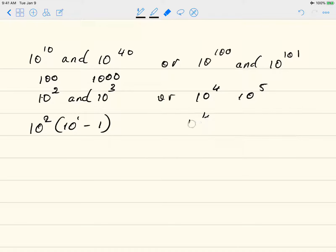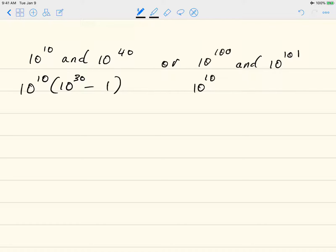So let's do the same method for the initial problem. All right, so for 10 to the 10 and 10 to the 40th, I'm going to pull out 10 to the 10th. And we have 10 to the 30th minus 1.